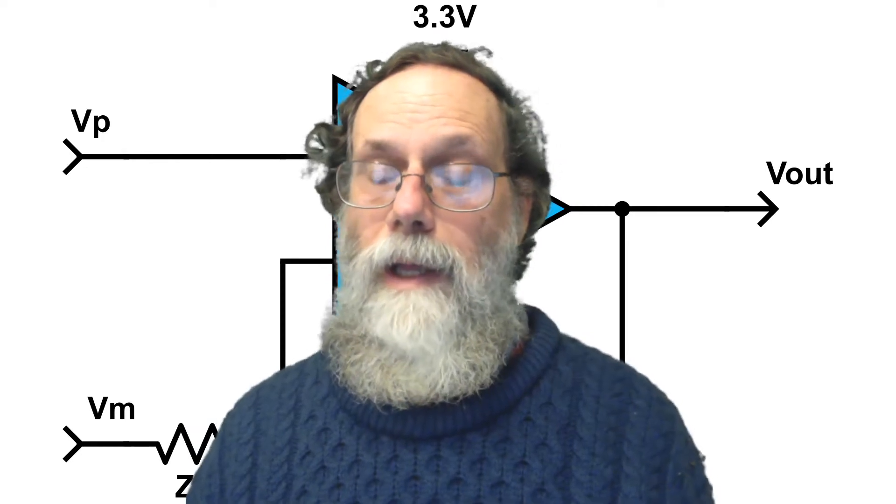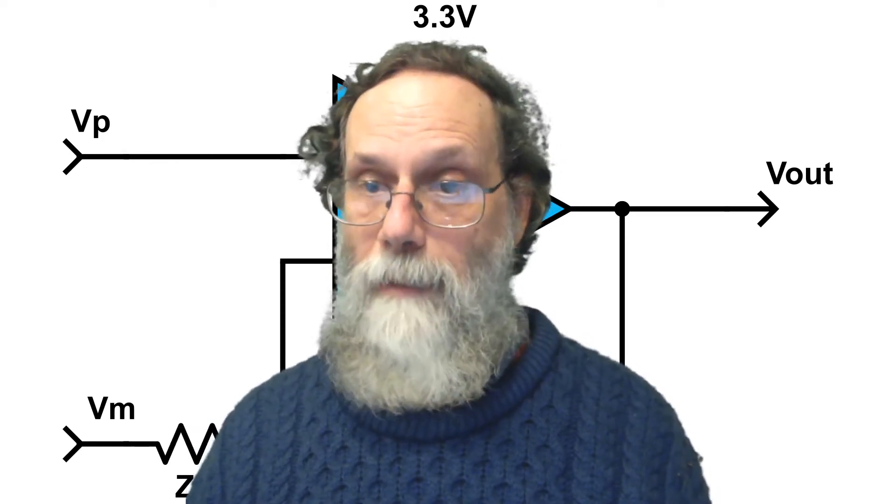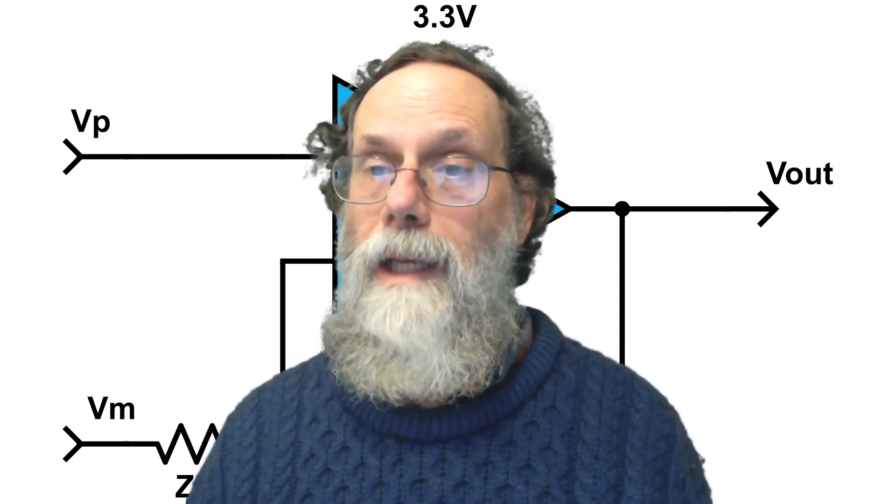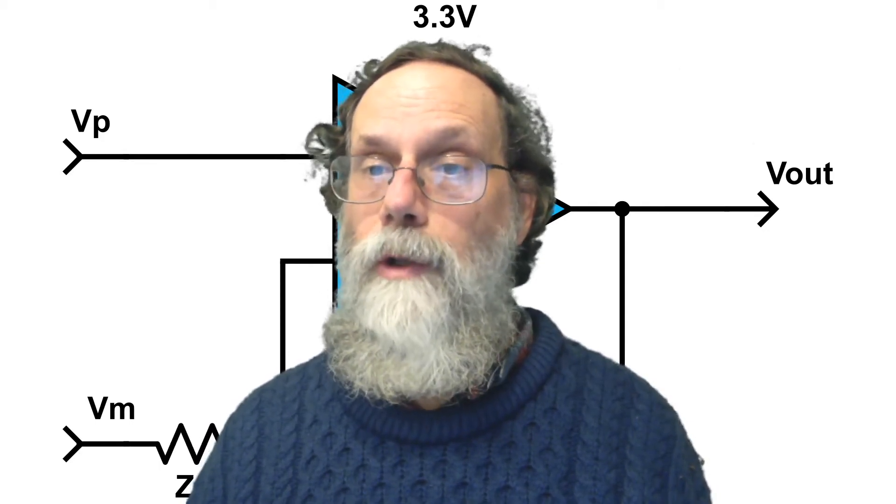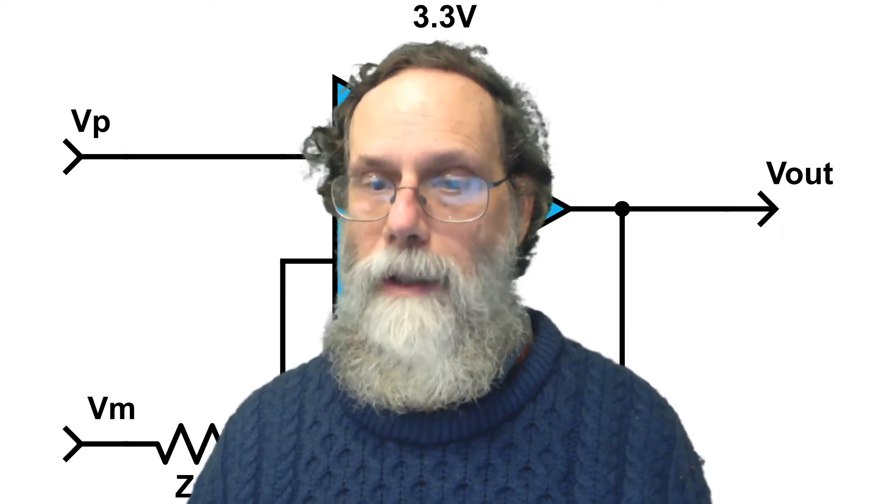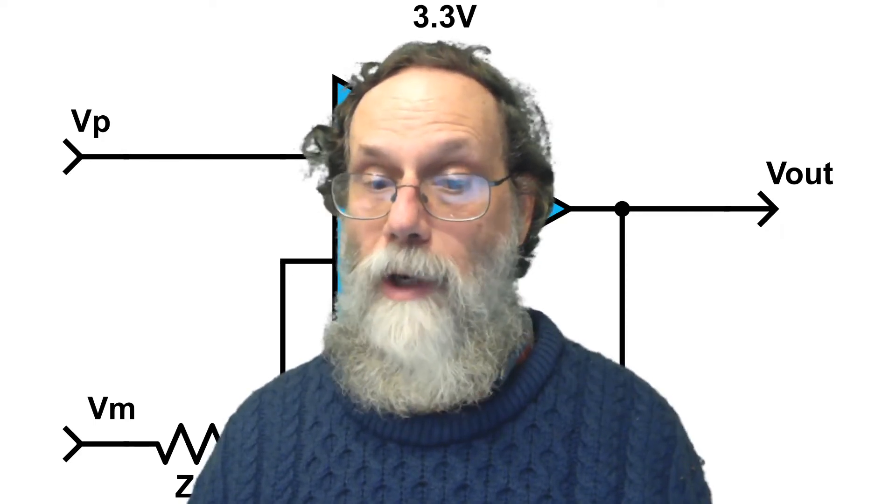This video is about making instrumentation amplifiers out of op-amps, in particular about making an instrumentation amplifier using three op-amps. It corresponds to section 40.1 of the applied analog electronics textbook.